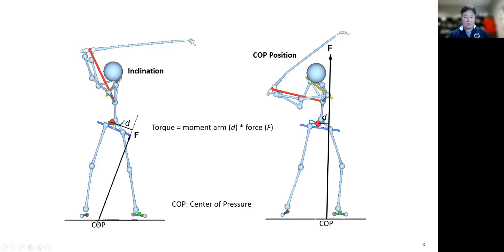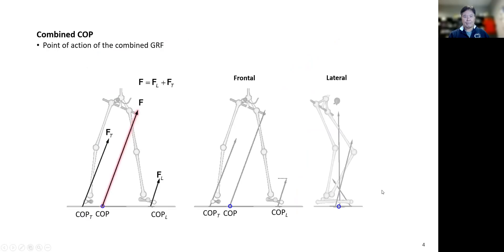The center pressure was located close to the trail foot, but now at this position it is close to the lead foot. What determines the position of the center pressure? These two are the individual foot center pressures, and this is the combined center pressure.